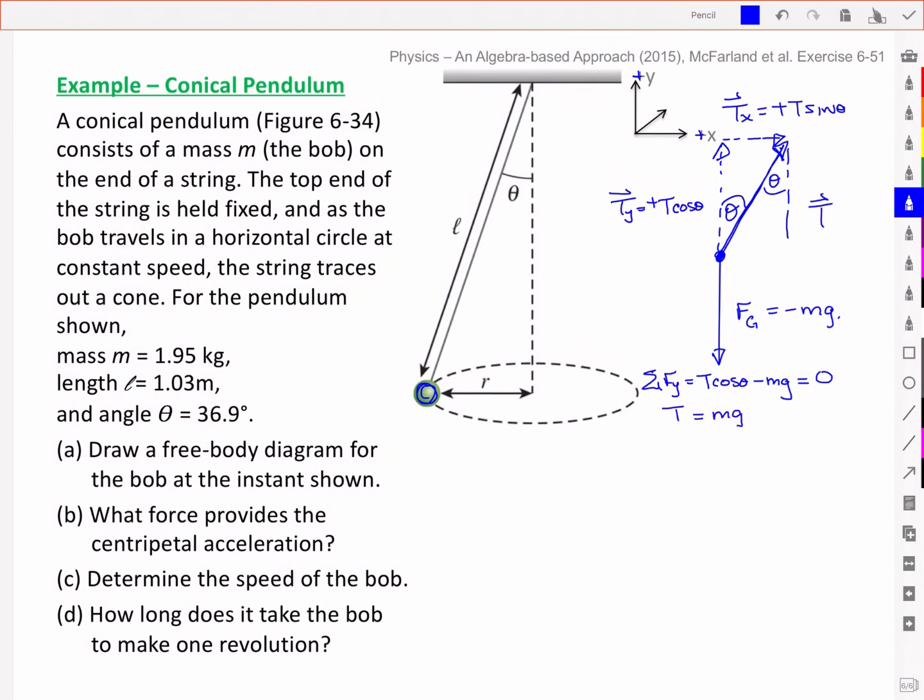I'm going to rearrange this equation, and so I know that my tension is then my mass, 1.95 kilograms times 9.8 meters per second squared, all divided by the cos of 36.9 degrees. And that will work out to give me a value of 23.90 kilograms meter per second squared, or 23.90 newtons. For now I'm going to leave it as kilograms per meter squared.